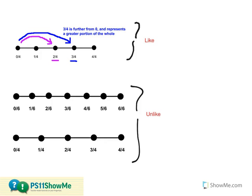With like fractions, since I'm working with denominators that are the same — in this case two-fourths and three-fourths — when I'm partitioning my number line into fourths, I can actually locate both of those fractions along the same number line, which makes it much easier to find two-fourths and then three-fourths, and note the difference between the two.